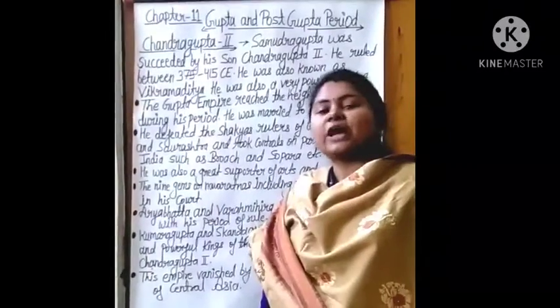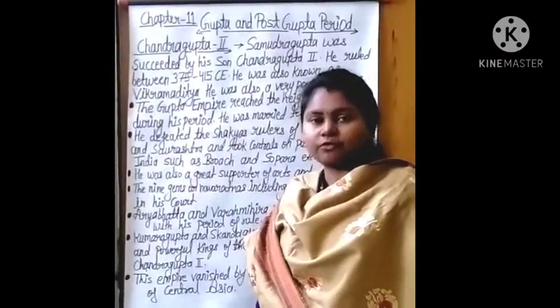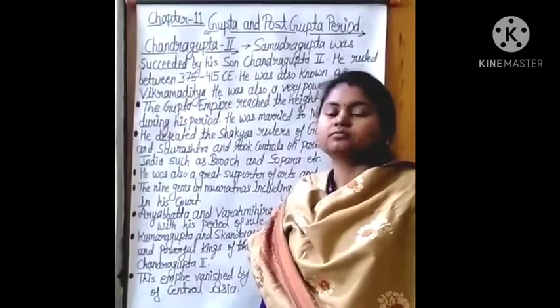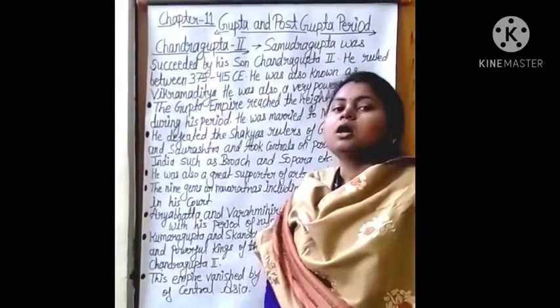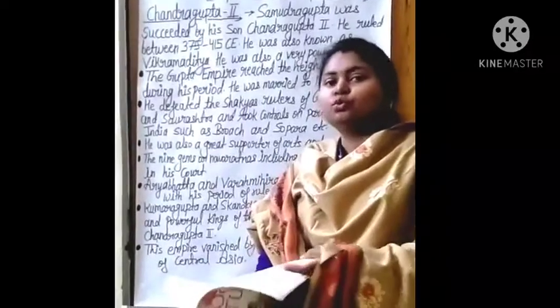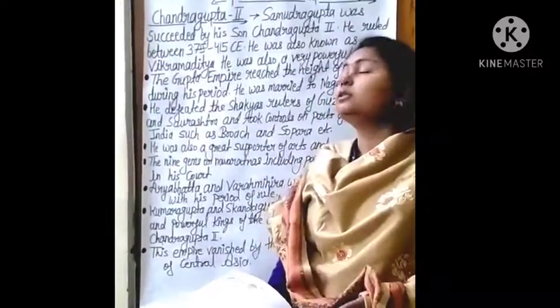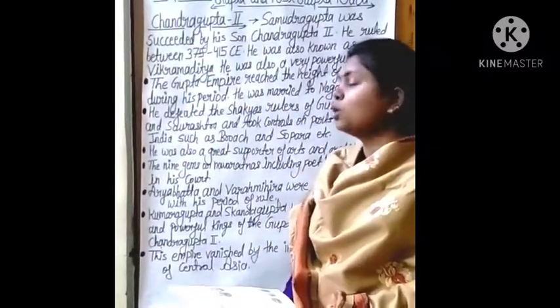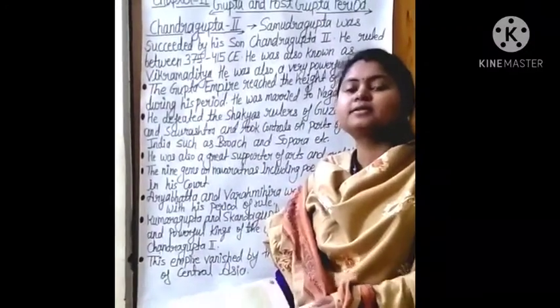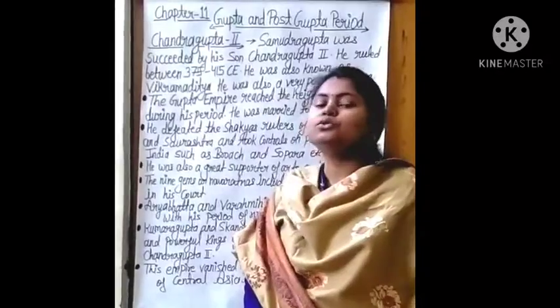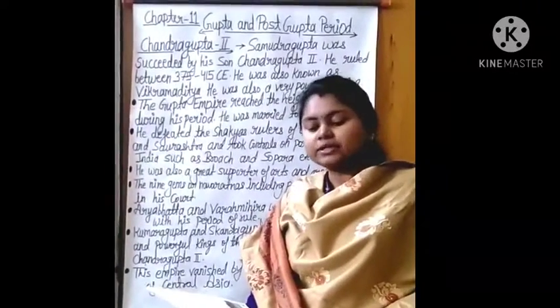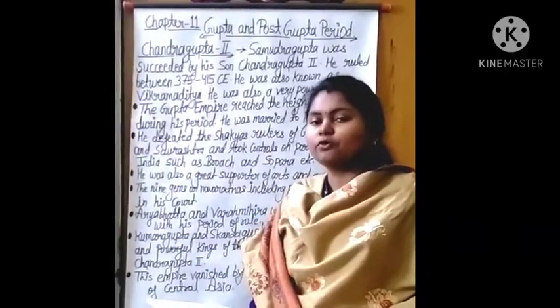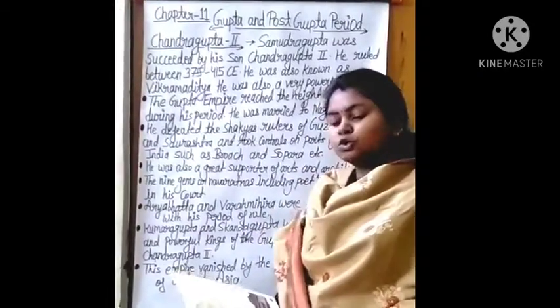A Chinese traveler named Fahyan came to India during the reign of Chandragupta 2. He wrote about the poets, philosophers, and writers who lived in the court of King Chandragupta 2.